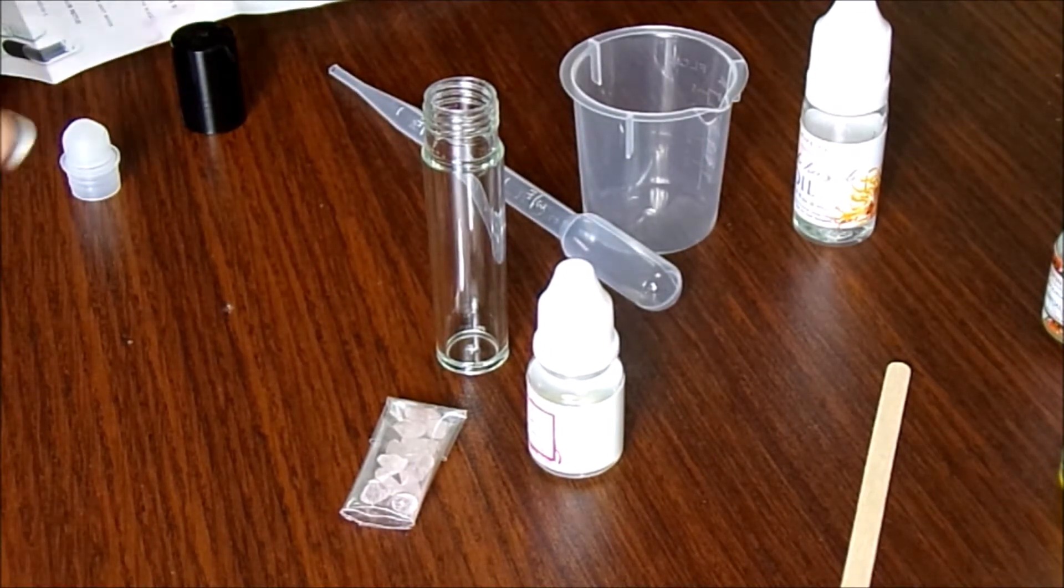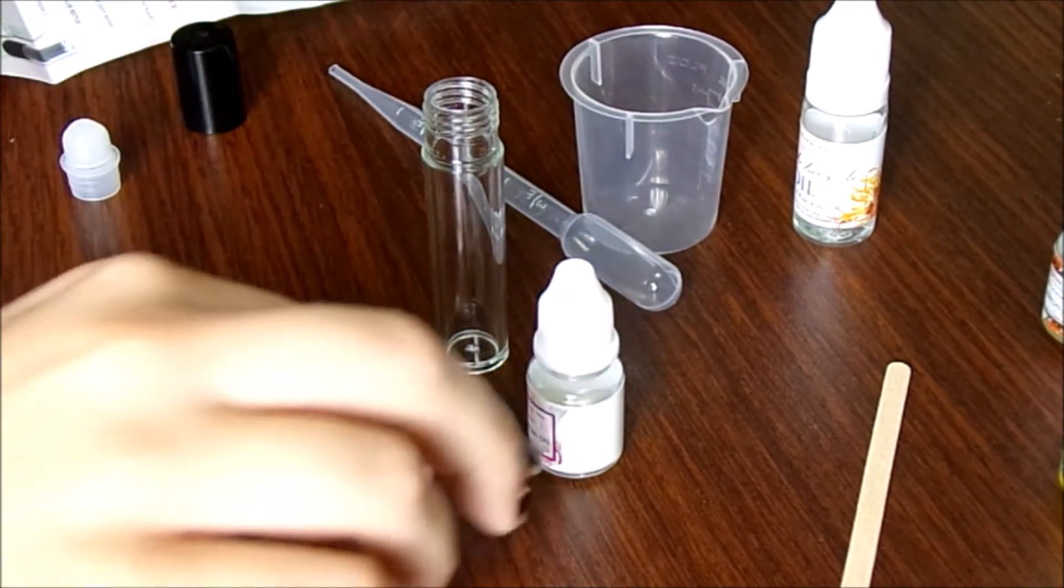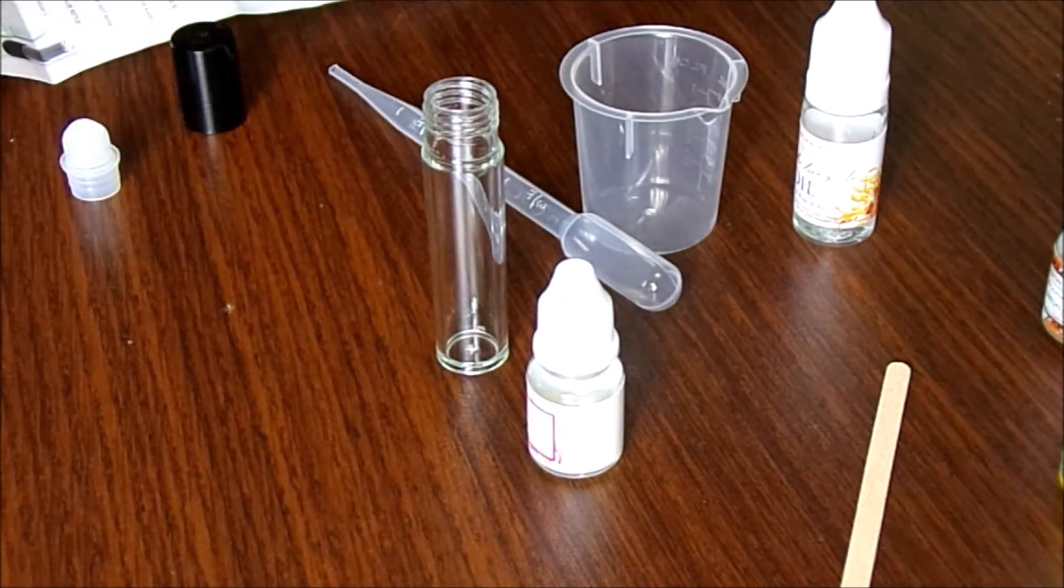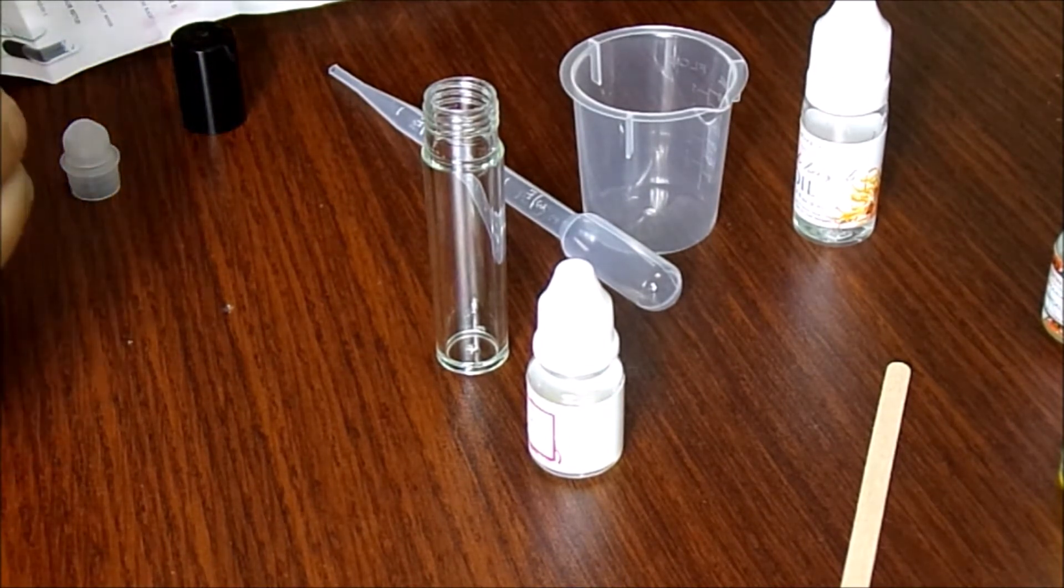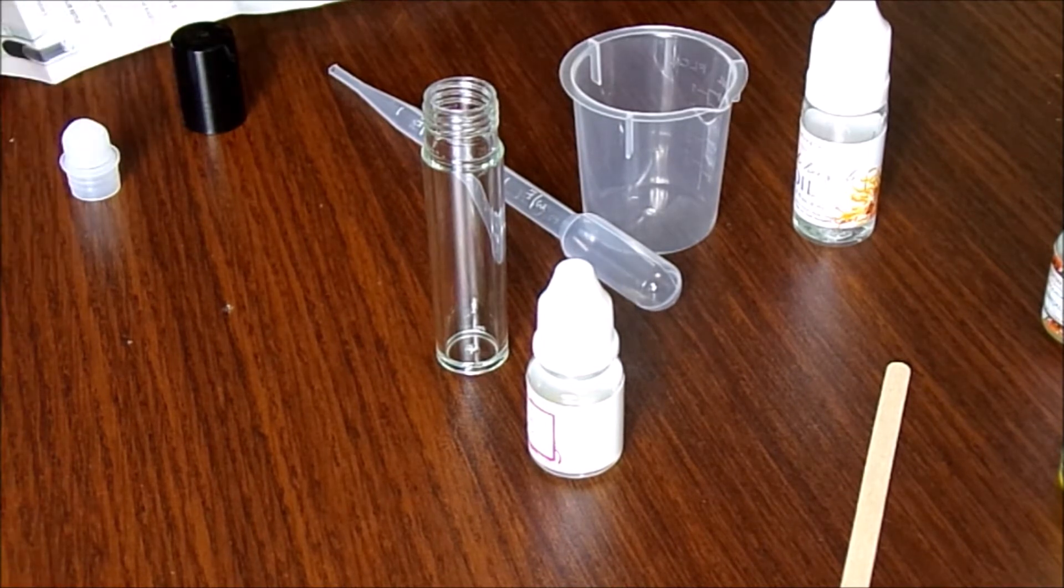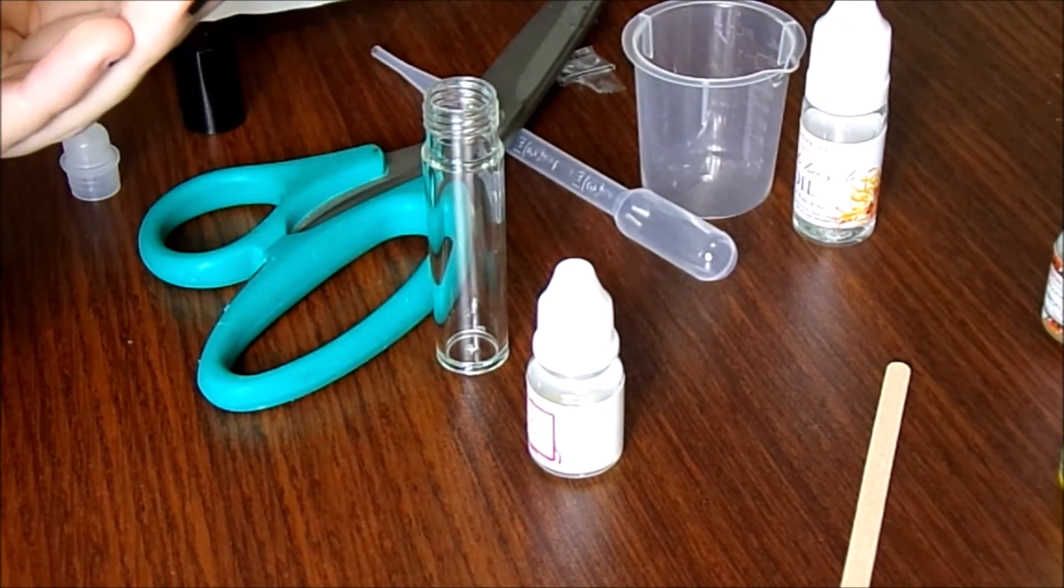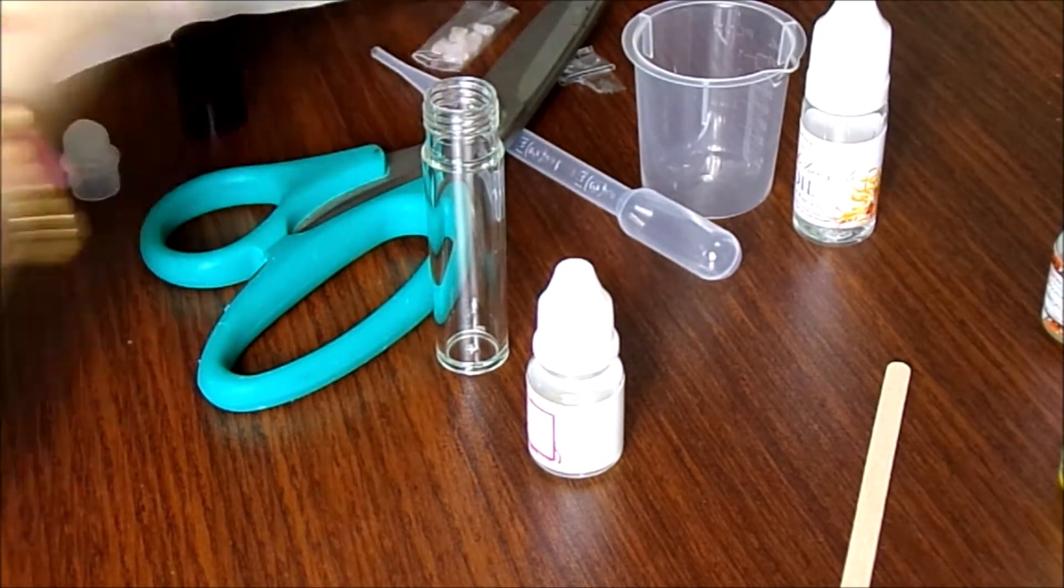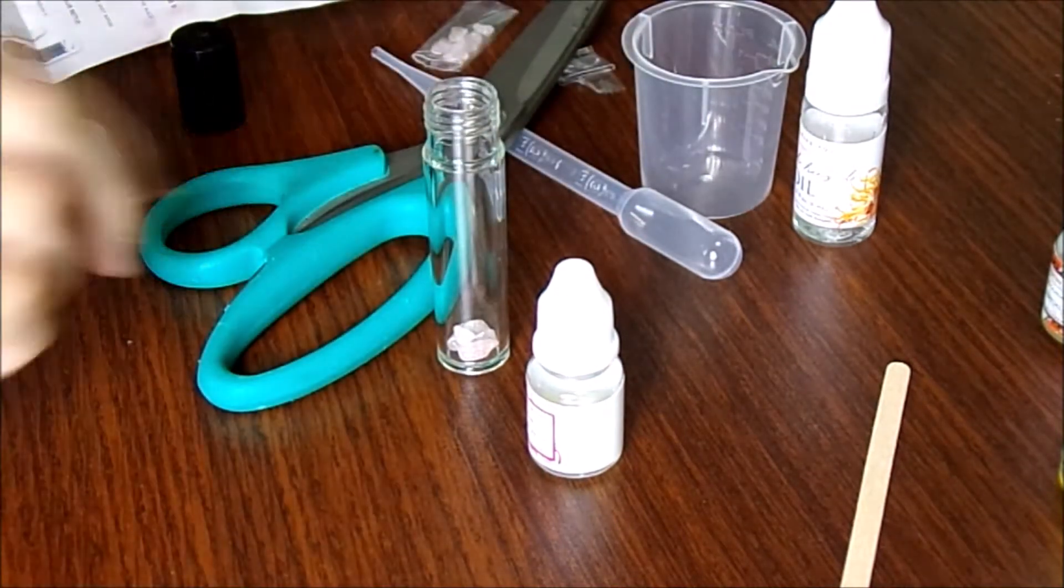It says to unscrew the lid of the roller bottle and pop off the roller insert, which it wasn't attached, so that's not hard. So add the gemstones first. I'm going to do that really quickly. If I can get them open, that would be helpful. Jeez, these things are packaged tightly. They don't really want me to get the gemstones out. I don't think they want me to get these gemstones out of here. I'm just going to put them in my hand. There we go. Then put them in here. That was a bad sound. Didn't like that.